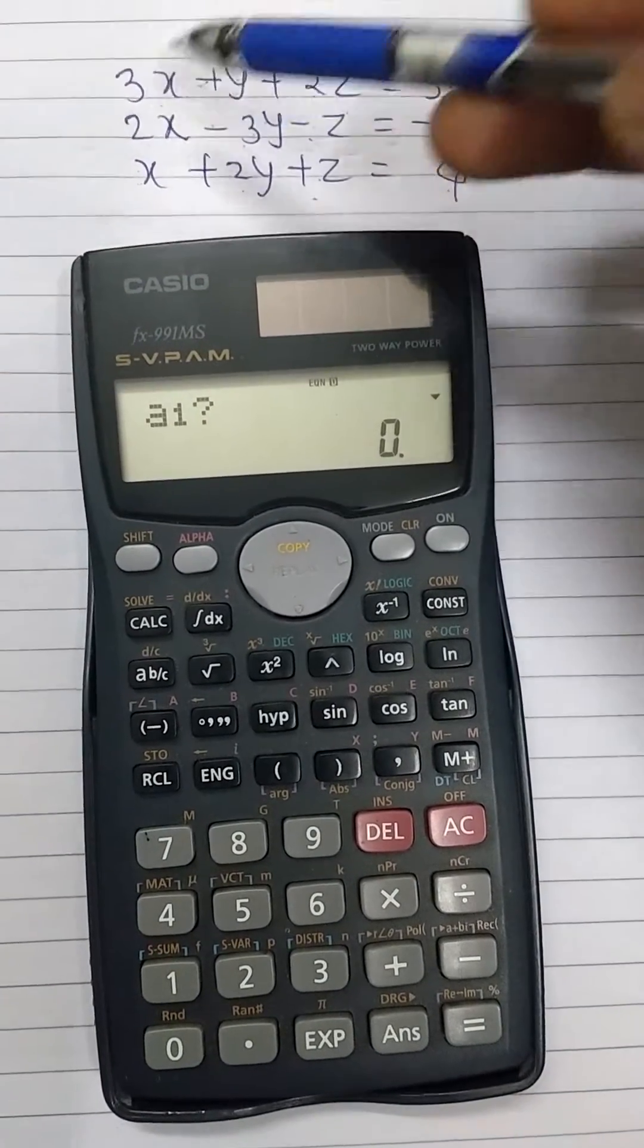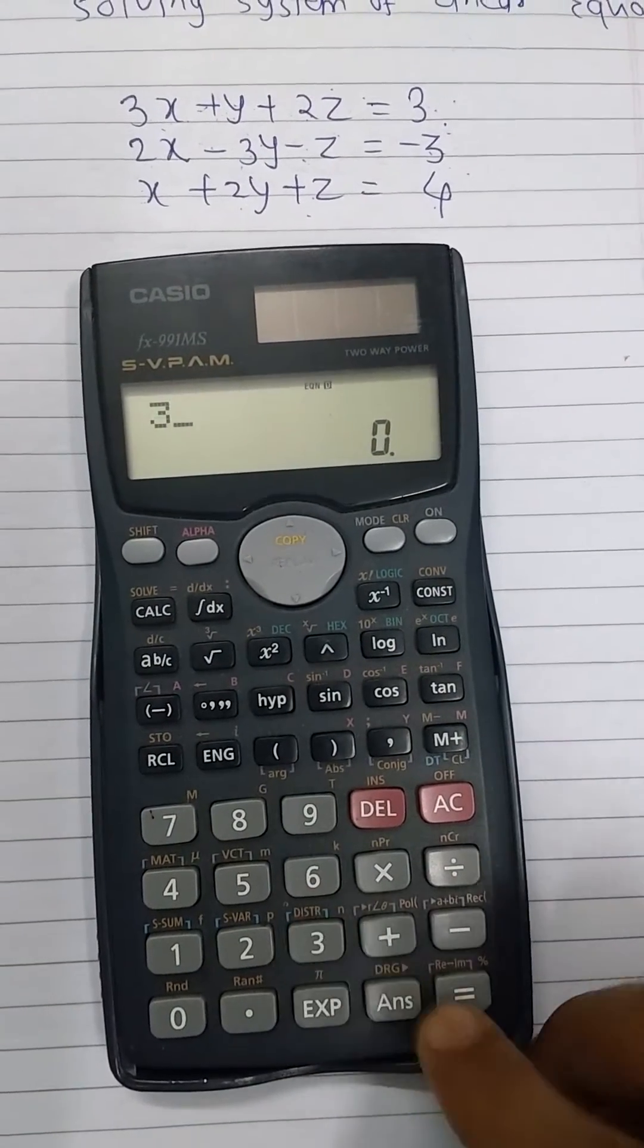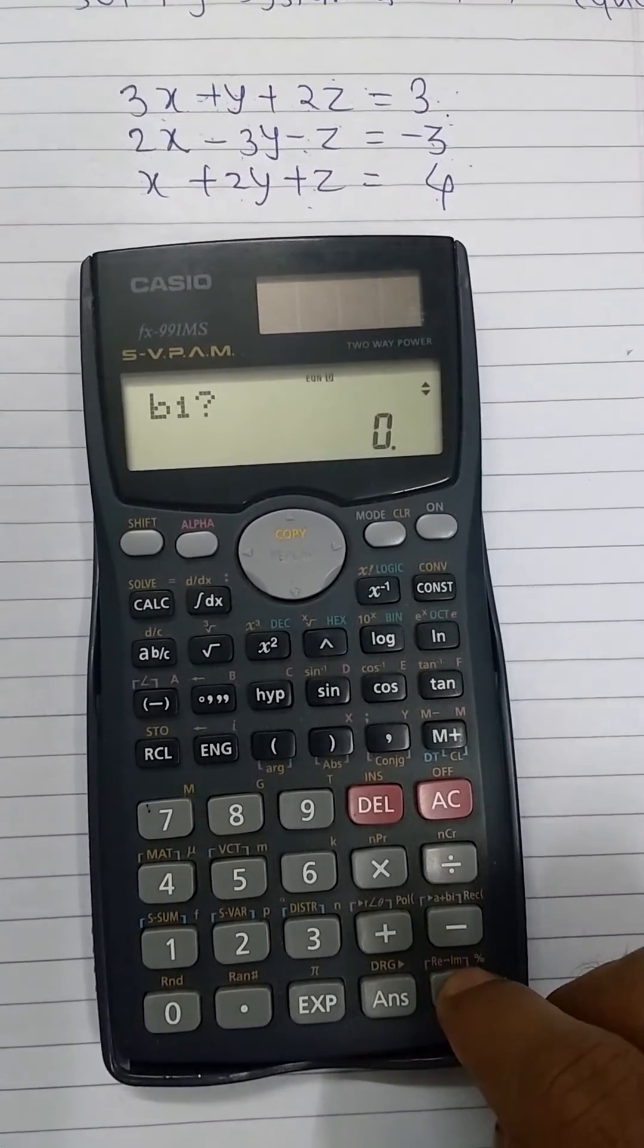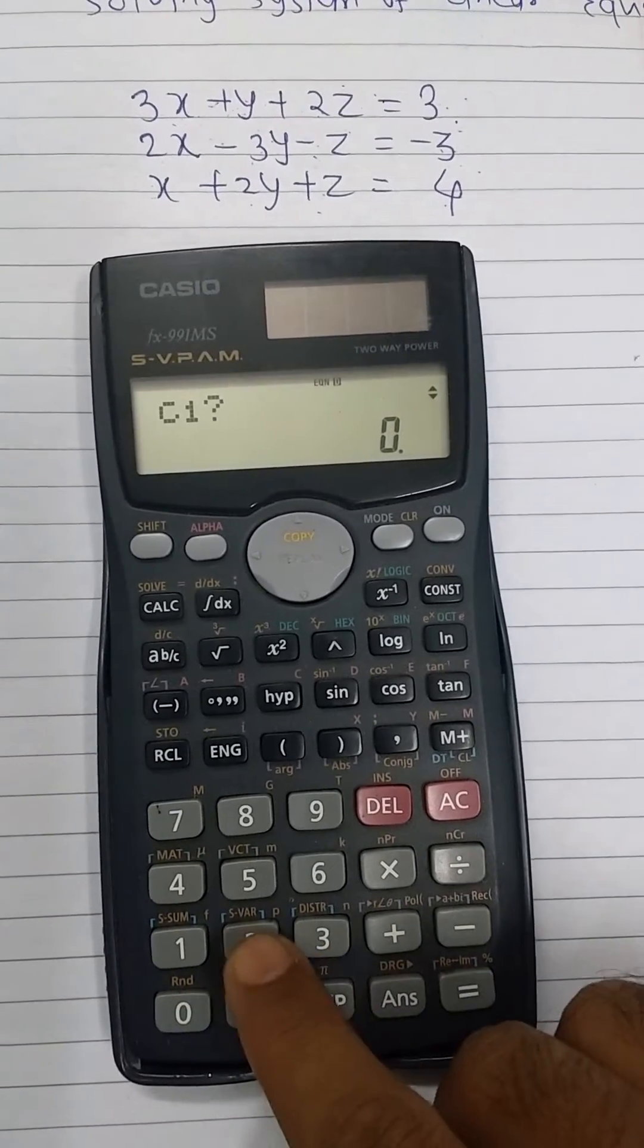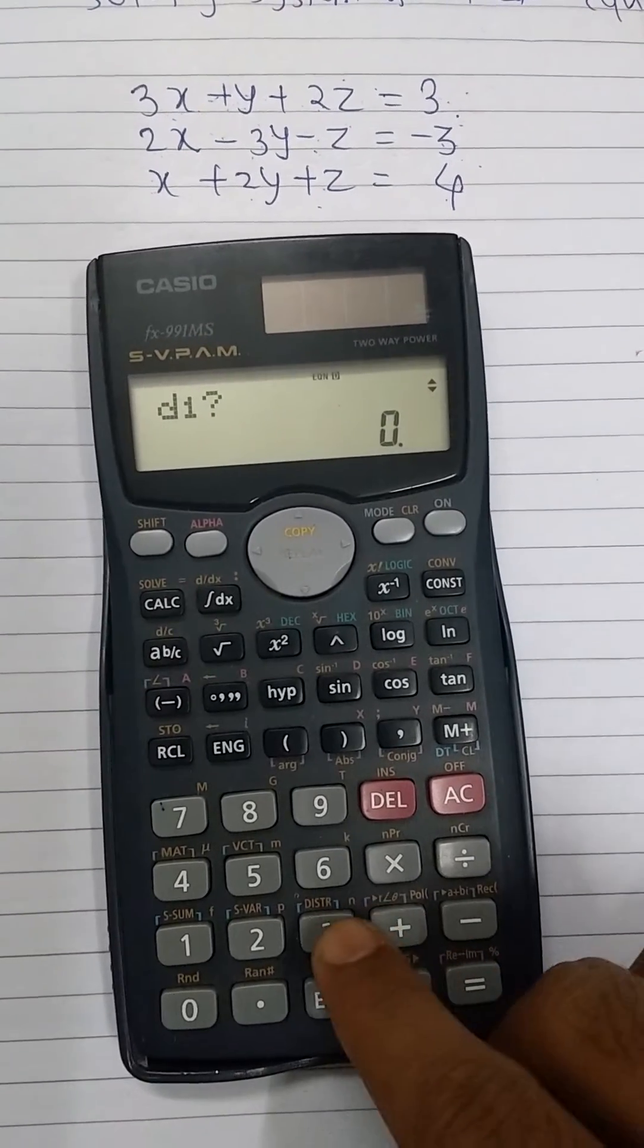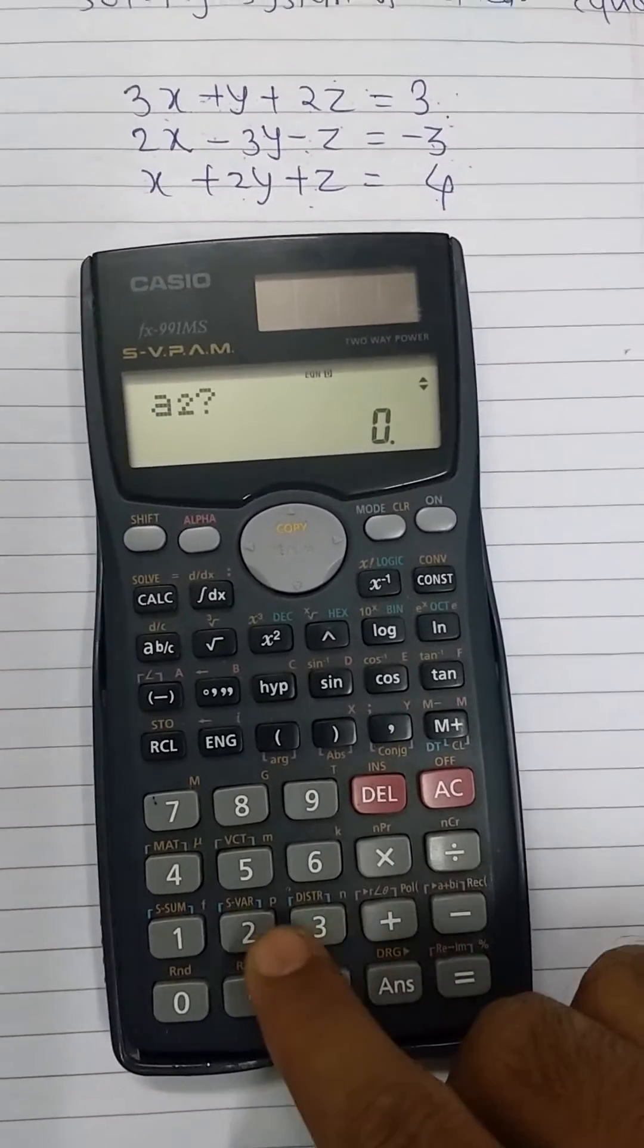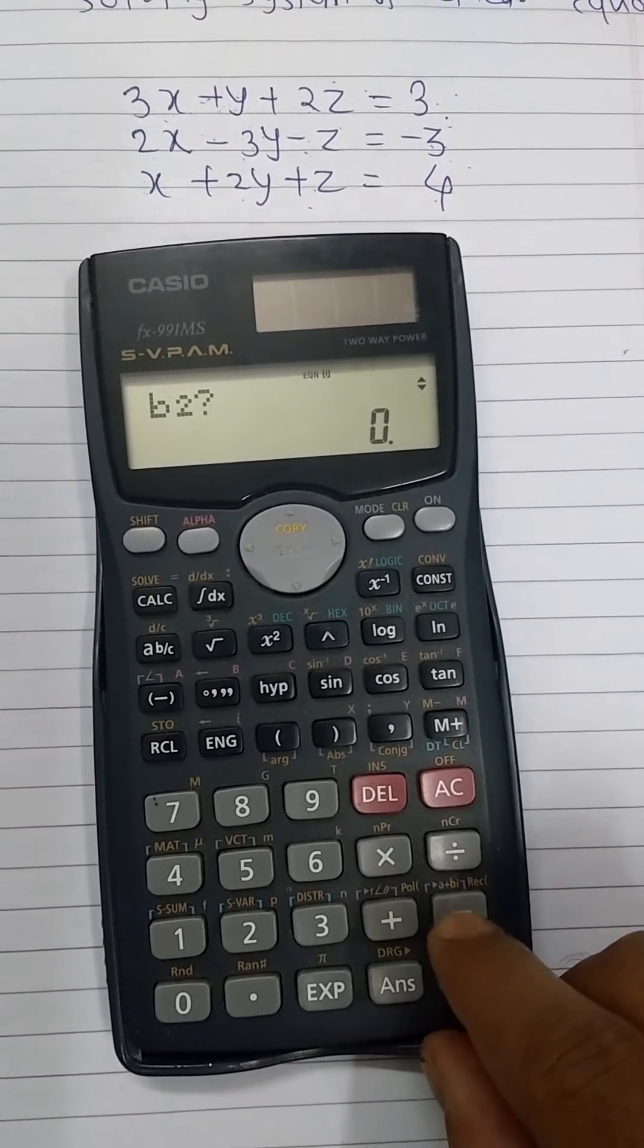Put all the values in this way. a1 is equal to 3, I am putting 3, then pressing equal button. b1 is equal to 1, I am pressing 1, again equal button. c1 is equal to 2. Equal button. d1 is equal to 3. Equal button. a2 is equal to 2. Equal button. b2 is equal to minus 3.